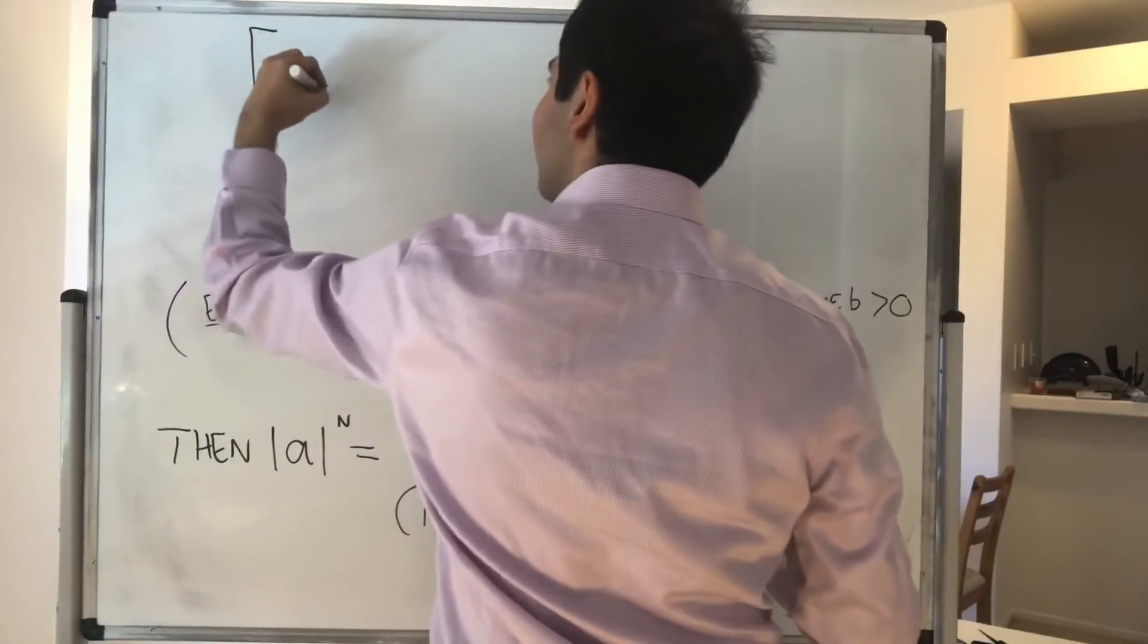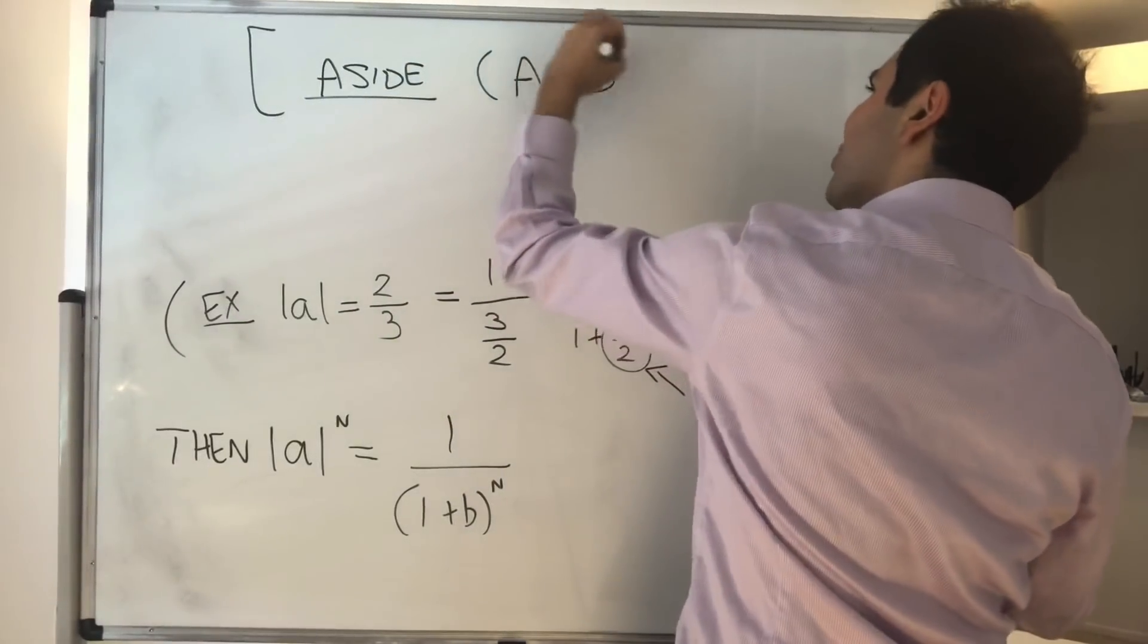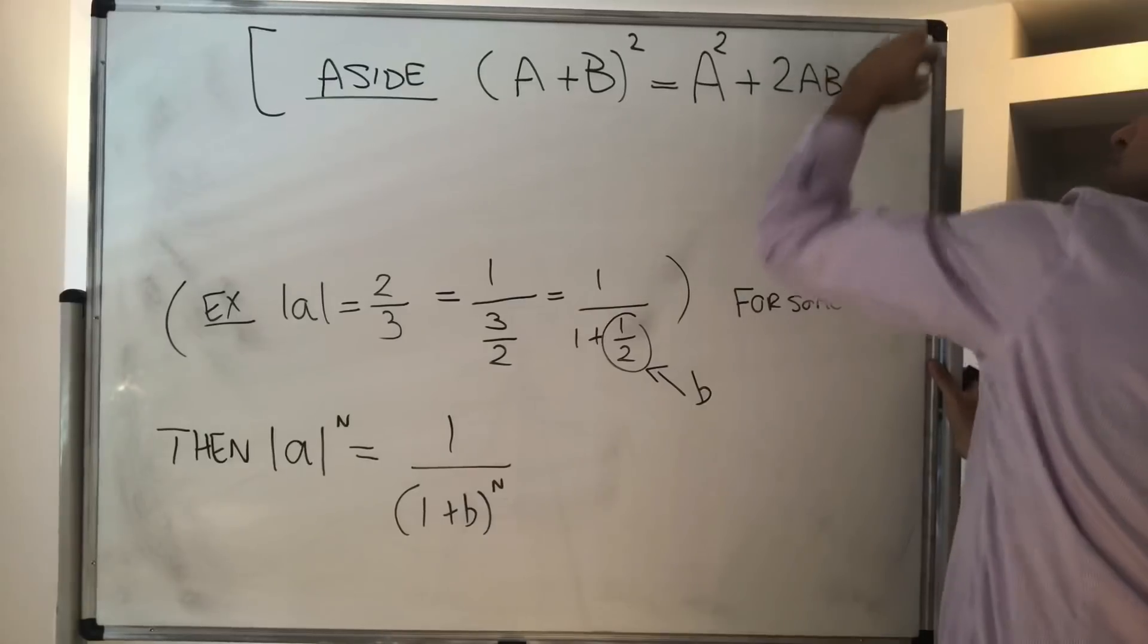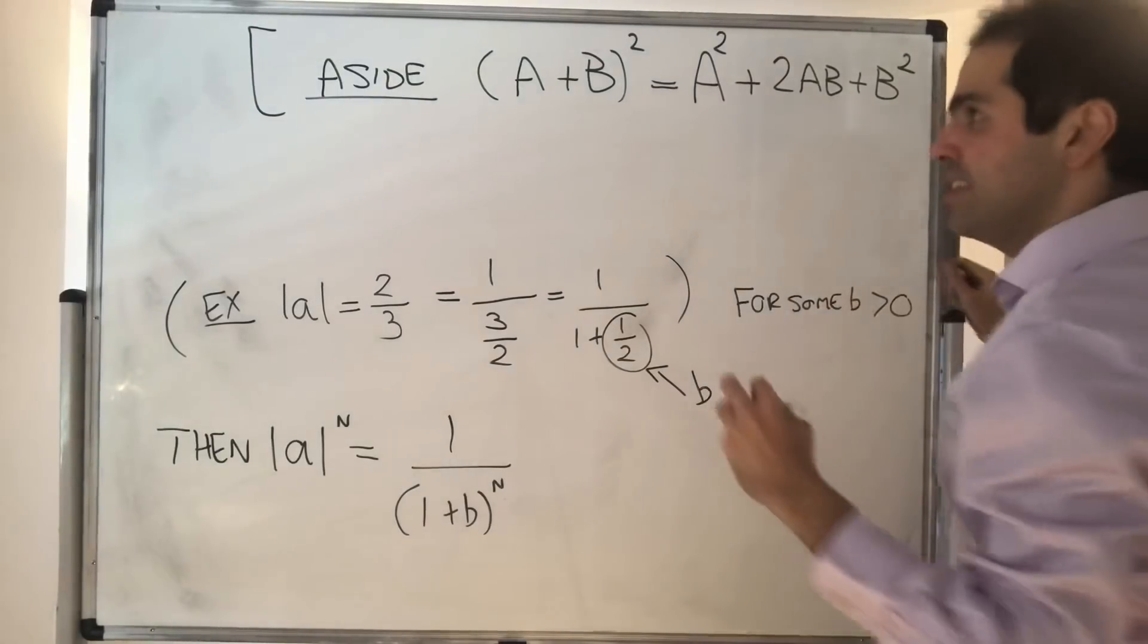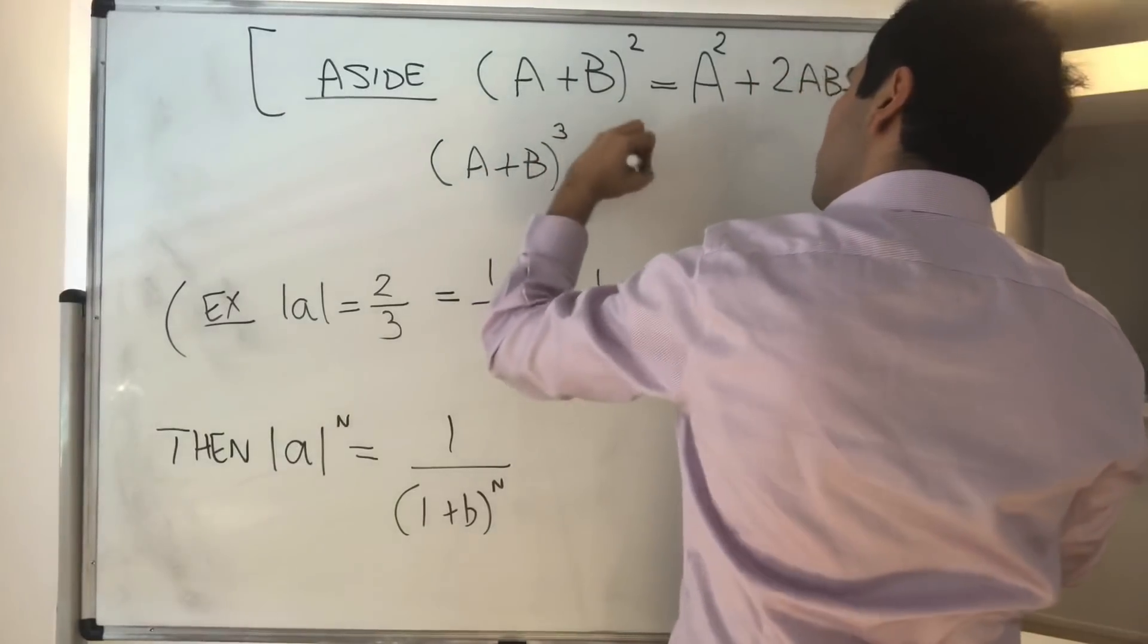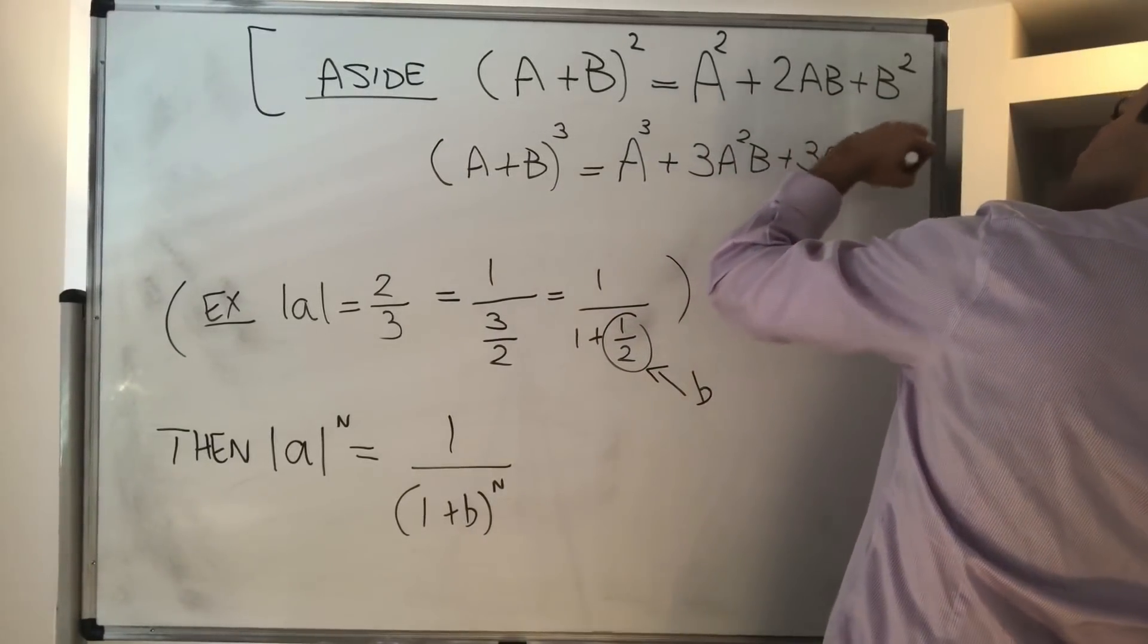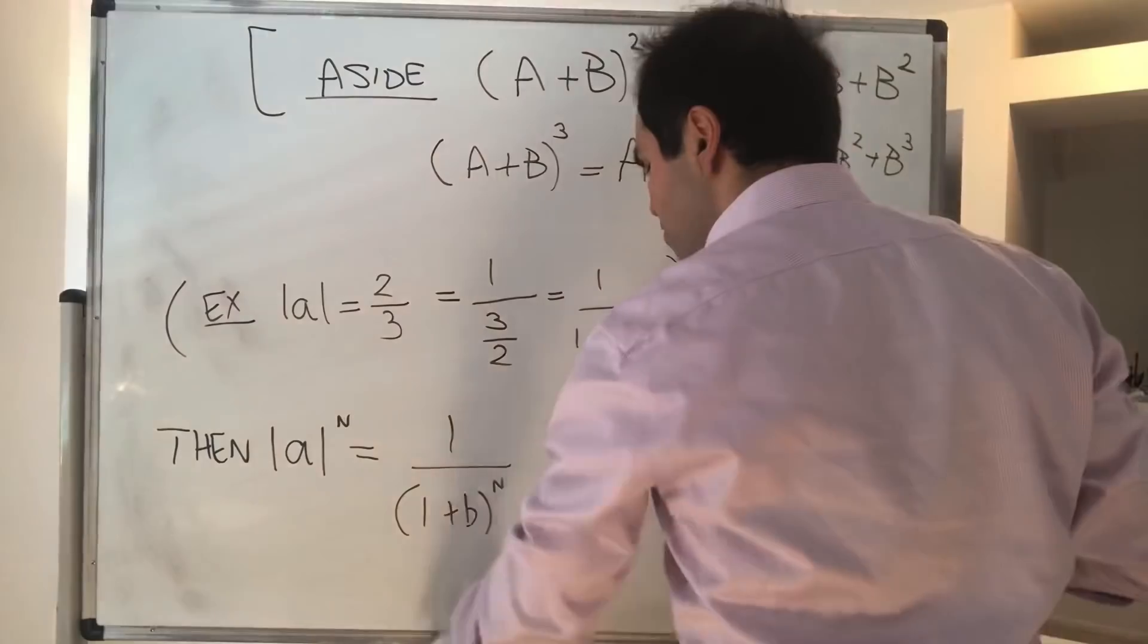So this is a bit of an aside. Suppose you want to expand out a plus b squared. Well, you start with a squared, and then 2ab, and then b squared. And notice the powers of a are decreasing, while the powers of b are increasing. And it turns out the same thing is true for a plus b cubed. You start with a cubed, and then 3a squared b plus 3ab squared plus b cubed. Again, the powers of a are decreasing, while the powers of b are increasing.